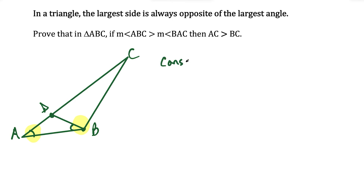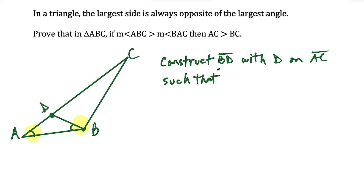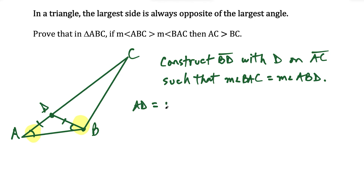We're going to construct BD, with point D on side AC, such that the measure of angle BAC equals the measure of angle ABD. By doing this we've created an isosceles triangle. In an isosceles triangle, equal base angles mean the sides opposite those base angles are also equal, so AD is equal to BD by the converse of the isosceles triangle theorem.